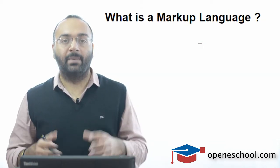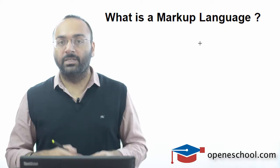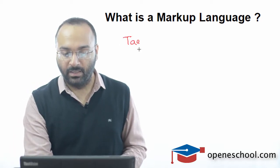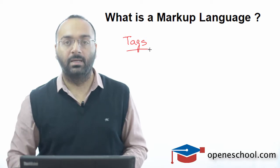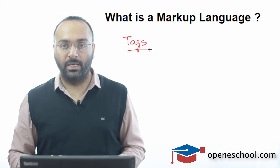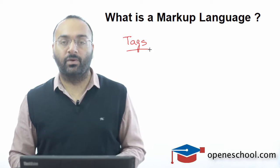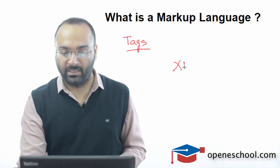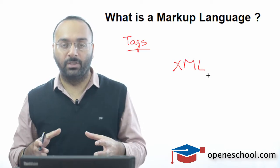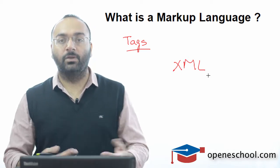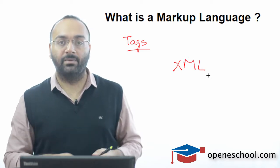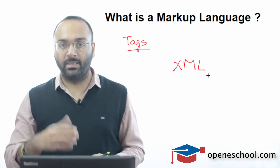Now, markup language. HTML is known as a markup language because it is written using tags. Any language which is written using tags is known as a markup language. For example, XML — which stands for Extensible Markup Language — is also written using tags, so it is also called a markup language. So markup language means that HTML is written using tags.